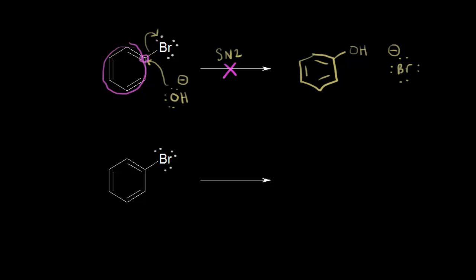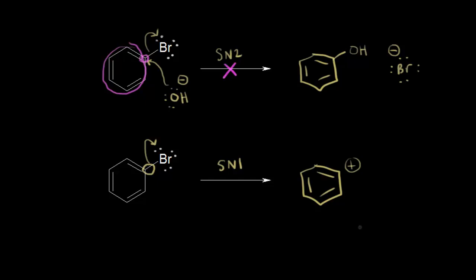What about an SN1 type mechanism? The first step in SN1 is dissociation — these electrons come off onto the bromine, giving the carbon bonded to bromine a plus 1 formal charge, forming a carbocation. The problem is that this is a very unstable carbocation. We can't draw any resonance structures for it, so since it's unstable, it's not likely to form. An SN1 type mechanism is highly unlikely.